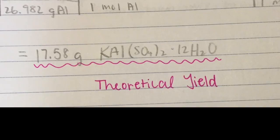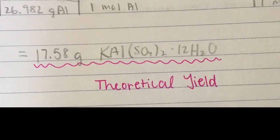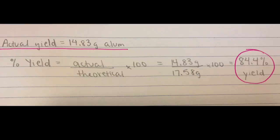Then we compare that to our actual yield, which was 14.83 grams. This shows that we had an 84.4% yield.